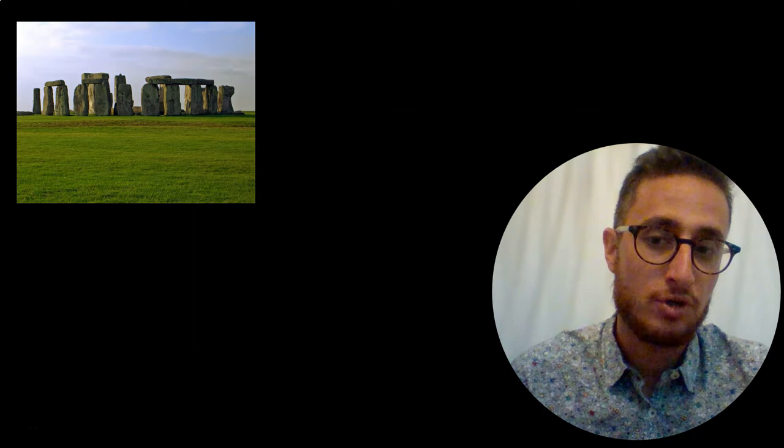Here you can see in the UK an ancient structure, Stonehenge, where on the solstice, a shadow is cast directly in the middle of this circle of stones. Clearly, these people are calculating and measuring the movement of things in the sky.